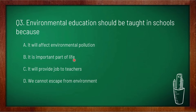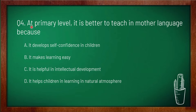Environmental education helps students understand how their decisions and actions affect the environment. It builds knowledge and skills necessary to address complex environmental issues, as well as ways we can take action to keep our environment healthy and sustainable for the future. So option B — it is an important part of life — is correct. Now question 4: at primary level it is better to teach in mother language because...